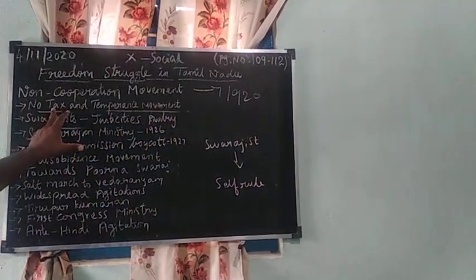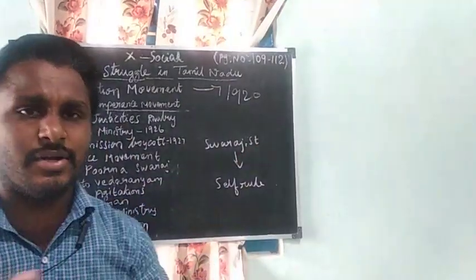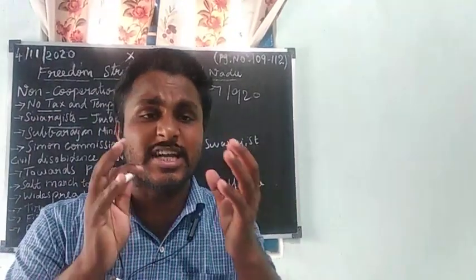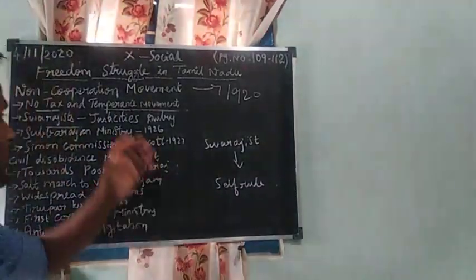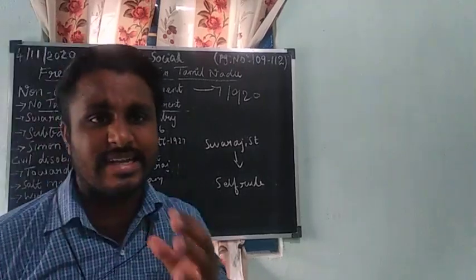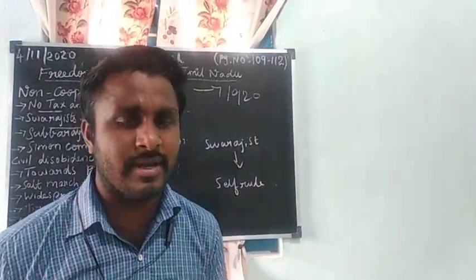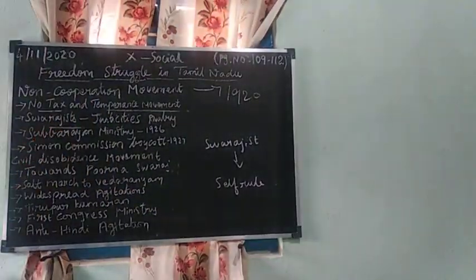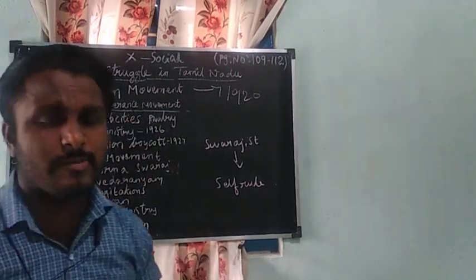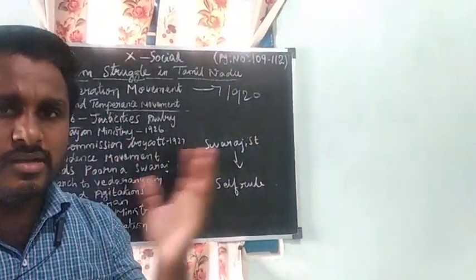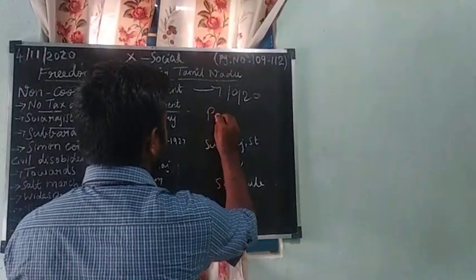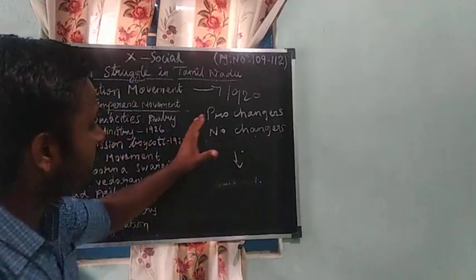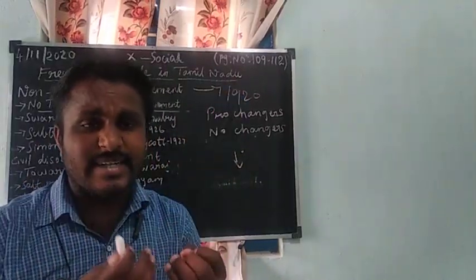In 1922, the Chauri Chaura incident occurred. What happened was that in 1922 some youngsters fired at a police station and killed 22 policemen. Because of this, Gandhi called off the non-cooperation movement in 1922. During the no tax campaign, as a result, the Indian National Congress divided into two factions: one is pro-changes and another is no-changes.